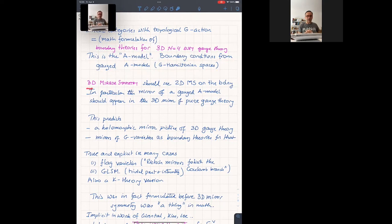And three-dimensional mirror symmetry, whatever it is, should see two-dimensional mirror symmetry on its boundary, its boundary conditions. So in particular, the mirror of a gauge A model, such as G Hamiltonian space, should appear. So if you start the gauge A model, G Hamiltonian space, it should have a mirror as a complex space, and that complex space should appear somehow in the 3D mirror of pure gauge theory.